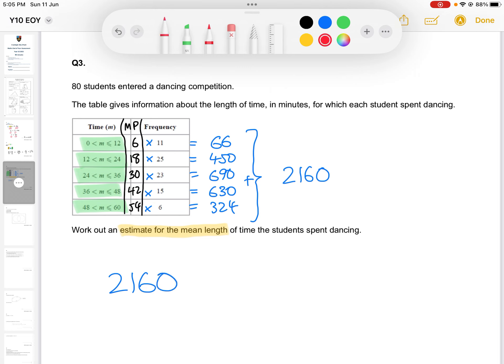We then, because we're trying to find the mean, we're going to divide that by the number of students in question. You can, of course, add together all these frequencies to give you another column here, but the question also told us right from the start that there were 80 students. Either way, I take that 2,160 and I divide it by 80, giving me a mean of 27 minutes. Done.